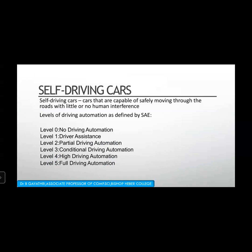Self-driving cars are capable of safely moving through roads with little or no human interference. The SAE defines levels from 0 to 5. Level 0 is no driving automation, level 1 is driver assistance, level 2 is partial driving automation, level 3 is conditional driving automation, level 4 is high driving automation, and level 5 is full driving automation. These are all the levels of self-driving cars in existence right now.